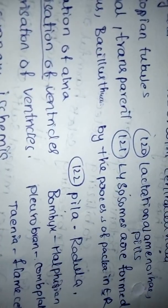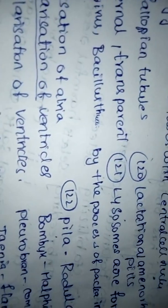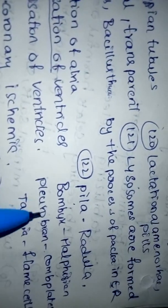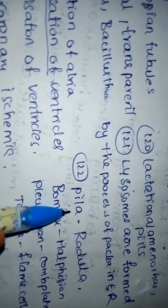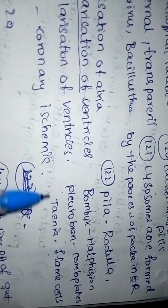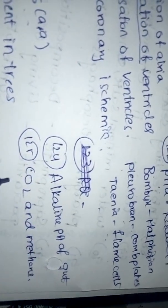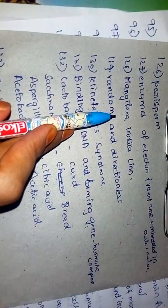Excretory organs. Alkaline pH of gut, carbon dioxide and methane, 126 pairs.